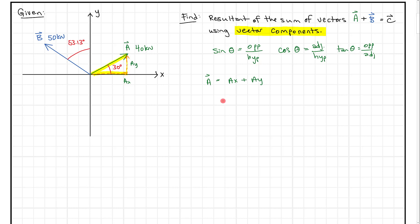The cosine of 30 degrees equals the adjacent over the hypotenuse. If this is our 30-degree angle, the adjacent is AX and the hypotenuse is A. Multiplying both sides by A, we get AX equals A times cosine 30. Plugging in 40 kilonewtons times cosine of 30 degrees, we get 34.64 kilonewtons.